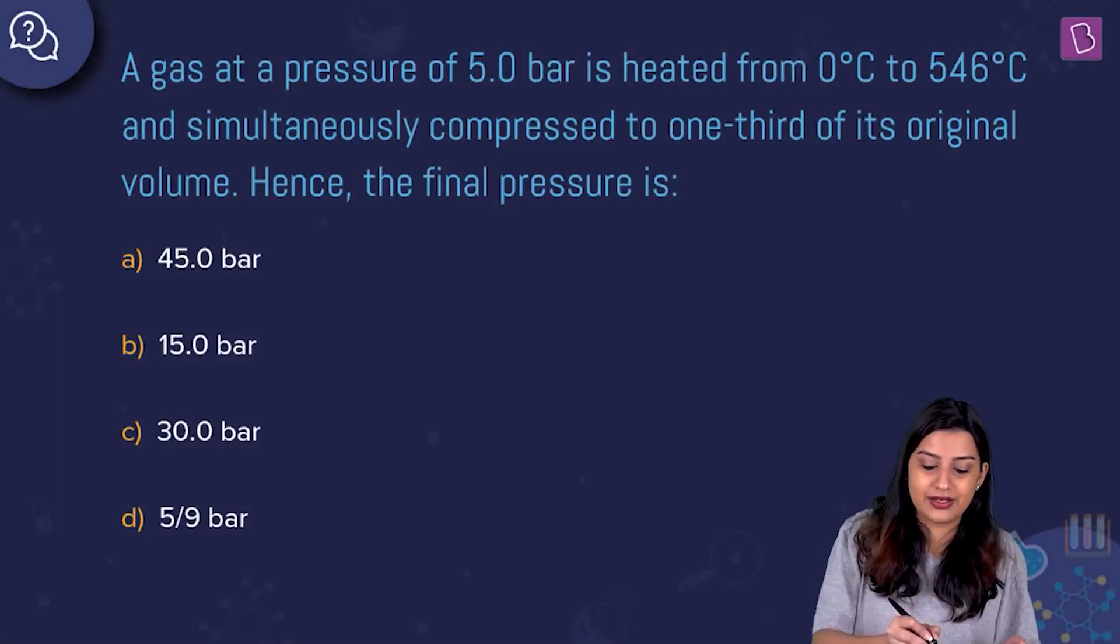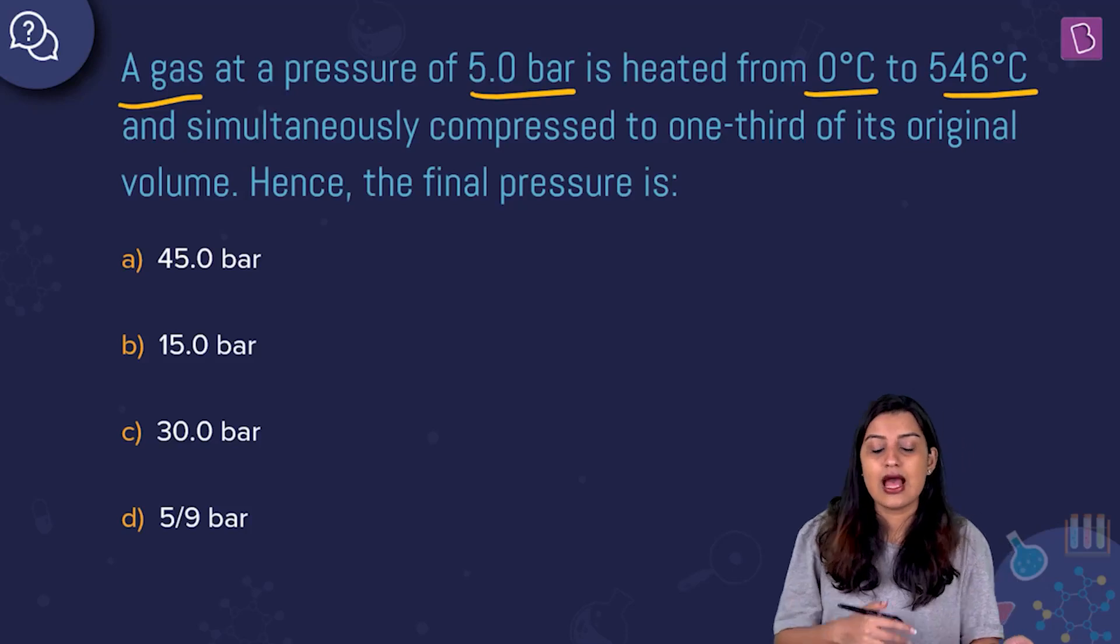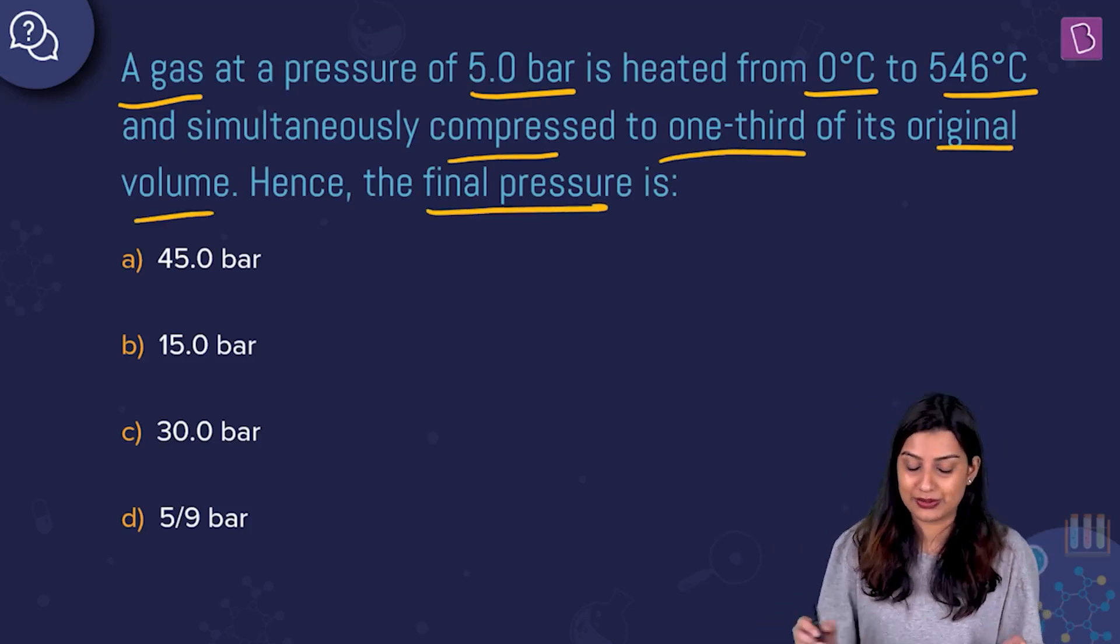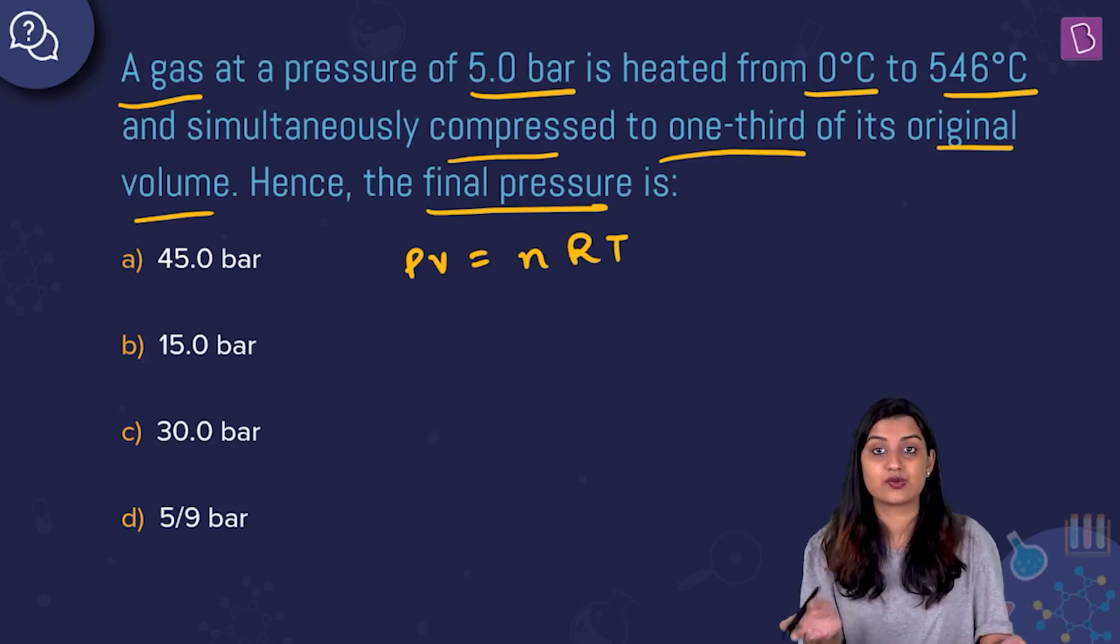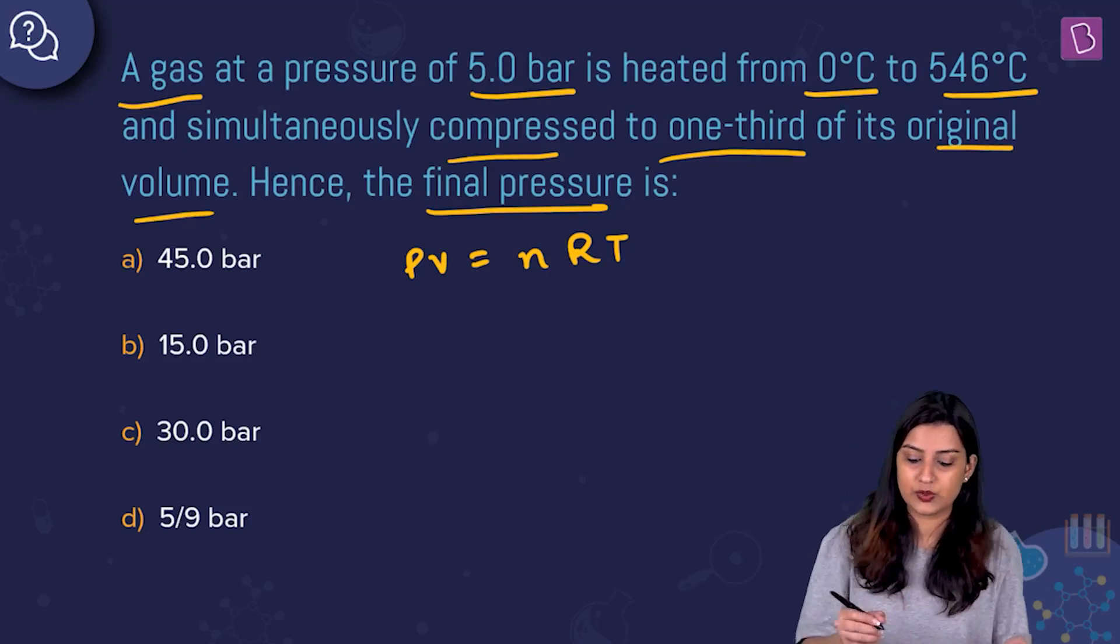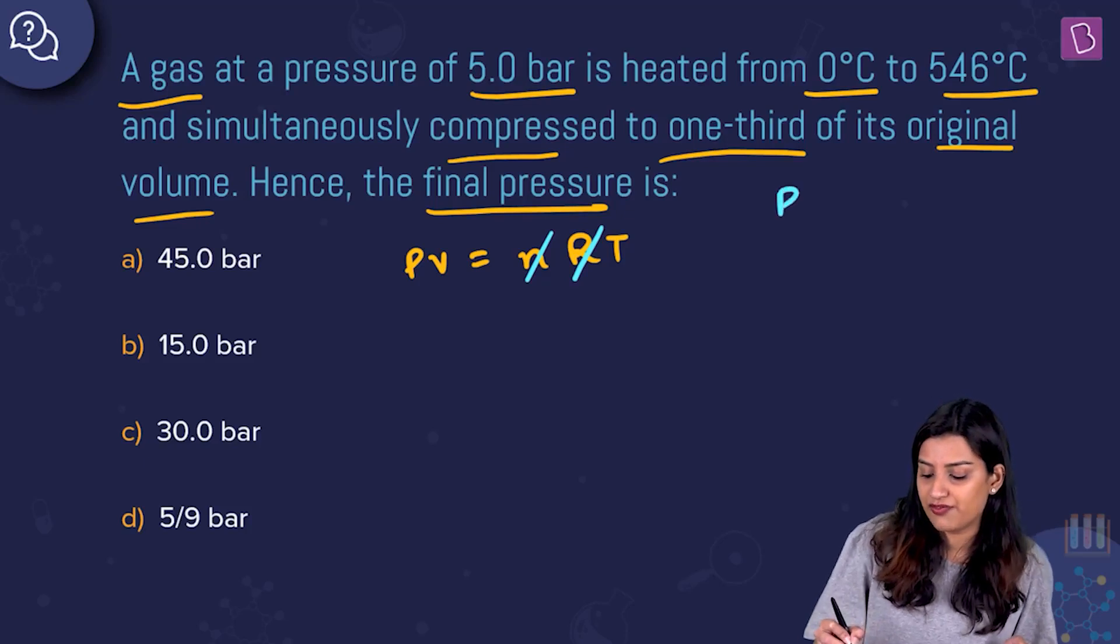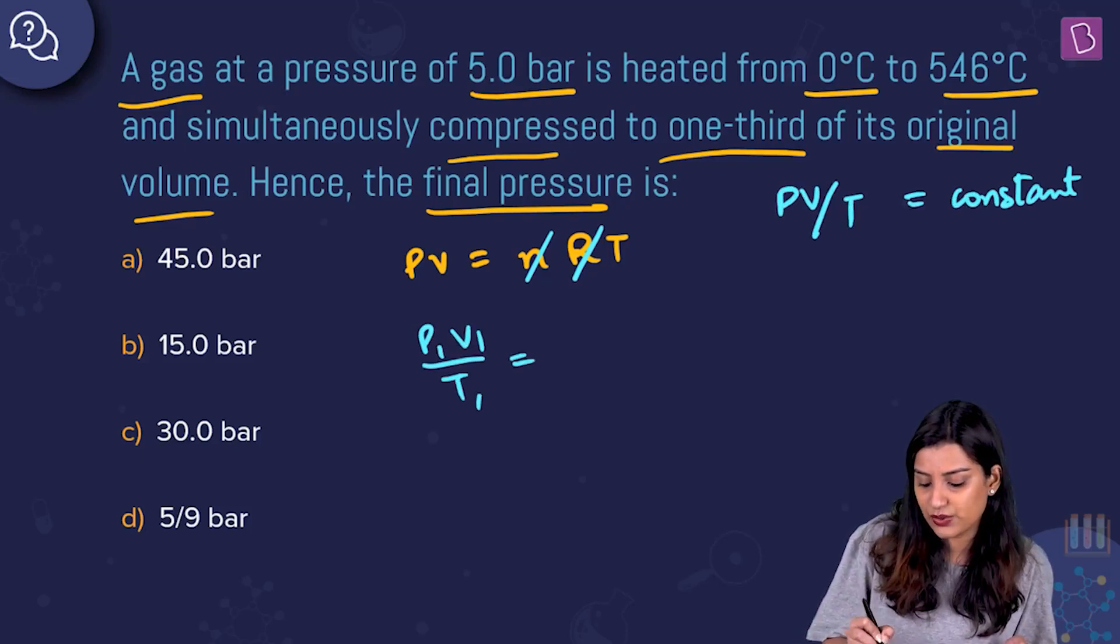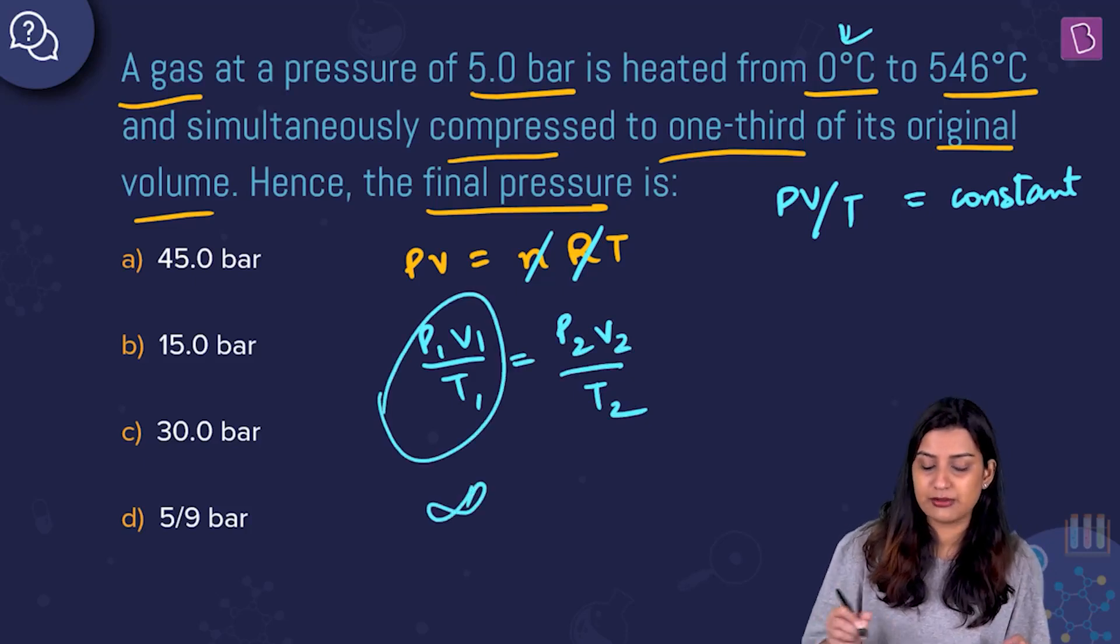A gas at a pressure of 5 bar is heated from 0 degrees Celsius to 546 degrees Celsius and simultaneously compressed to one third of its original volume. Hence, the final pressure is going to be about what? We are looking at the ideal gas equation. Pressure is changing, temperature is changing, and volume is changing, which means R is a constant and number of moles is a constant. My formula becomes PV by T is a constant, which means P1 V1 by T1 equals P2 V2 by T2.